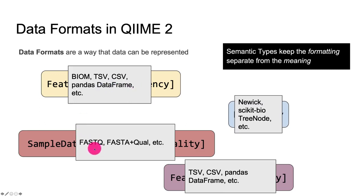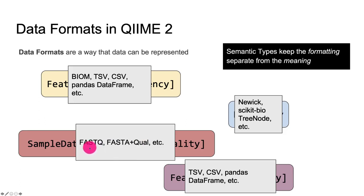For sample data of sequences with quality, we have the possibility of representing this data as a FASTQ file, or maybe as a FASTA plus QUAL file. There is no reason why one is necessarily better than the other. The point is that one type of data can be represented with multiple different formats or representations.